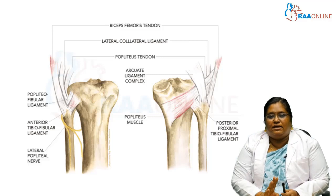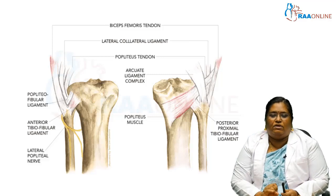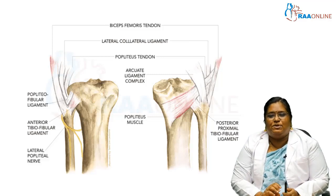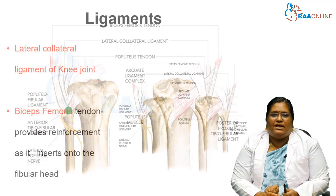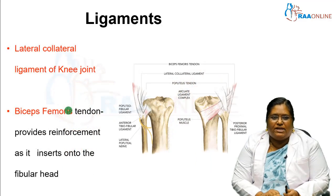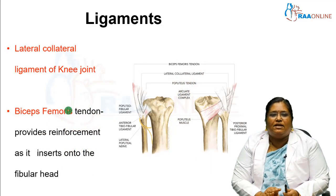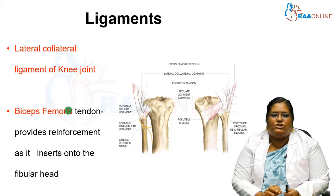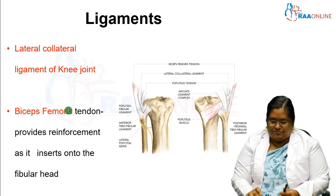In total, there are four ligaments for the proximal tibiofibular joint: the capsule, the anterior ligament, the posterior ligament, and additionally the lateral collateral ligament of the knee joint and the biceps femoris tendon.